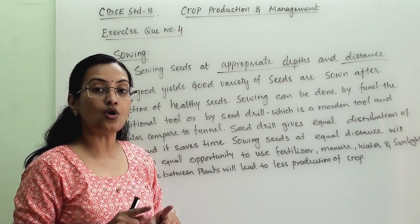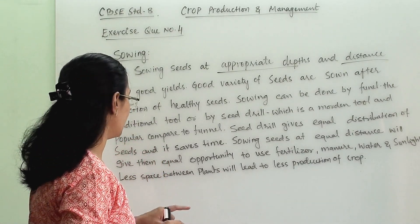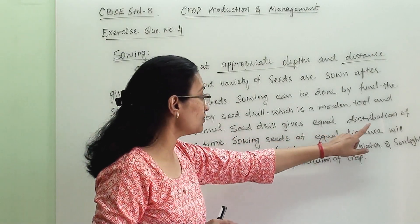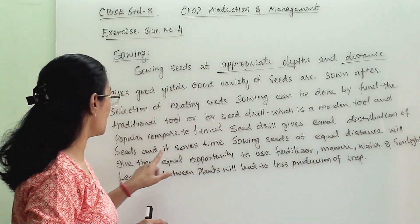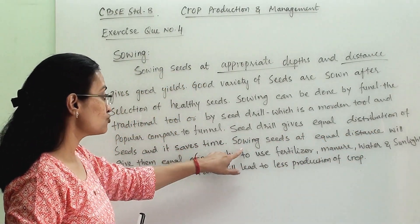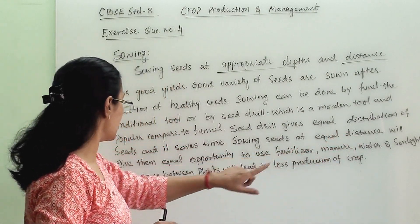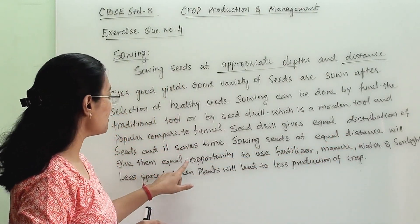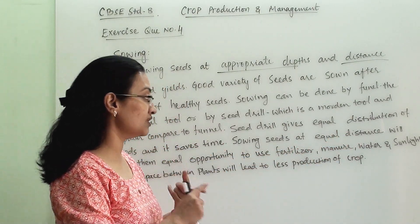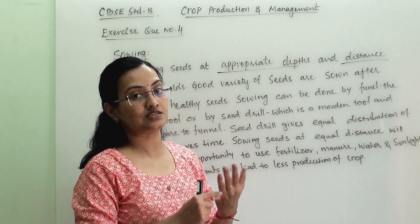Seed drill is important for the healthy growth of plants. Seed drills give equal distribution of seeds and save time. Sowing seeds at equal distance gives them equal opportunity to use fertilizer, manure, water, and sunlight.